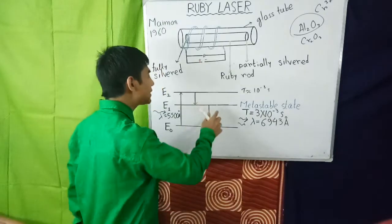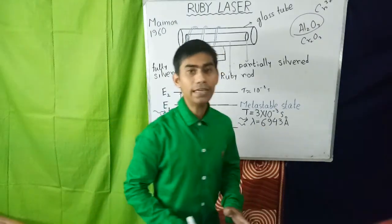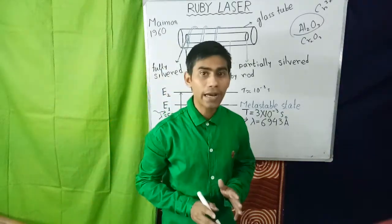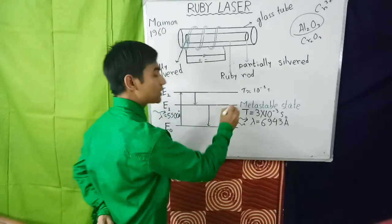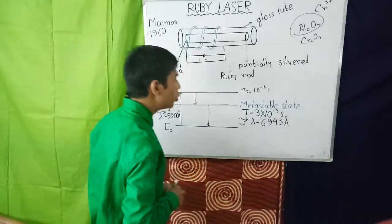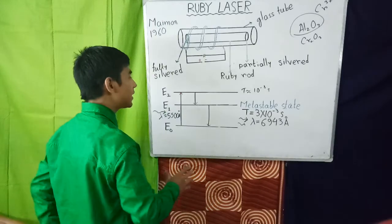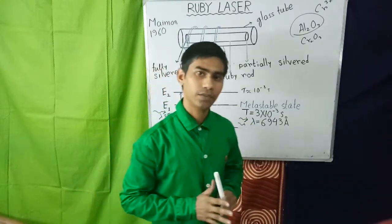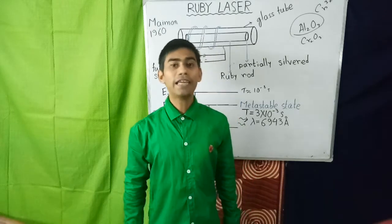When a chromium atom in the metastable state E1 makes a spontaneous transition to the ground state E0, a photon of red light of wavelength 6943 Angstrom is emitted. This photon travels through the ruby rod and is reflected back by the silvered faces. When this photon interacts with another atom in the metastable state E1, it stimulates that atom to fall into the ground state E0, emitting two photons of the same wavelength. These photons induce further transitions, producing a large number of coherent photons — giving rise to light amplification by stimulated emission. The result is a highly intense, monochromatic, unidirectional laser beam. Thank you for watching this video.